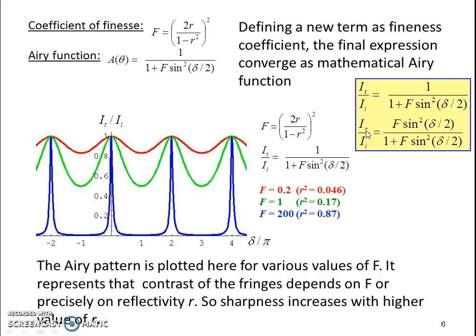If you plot this mathematical function in one dimension, we can get the distribution of Airy pattern in this figure. In this figure it is assumed with three values of F which are 0.2, 1, and 200.